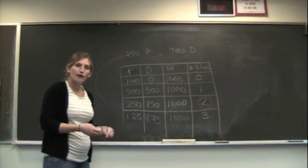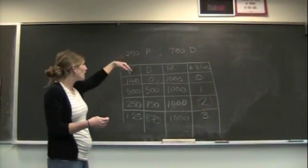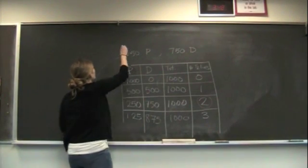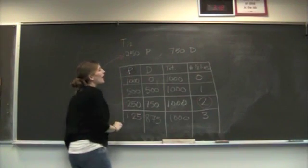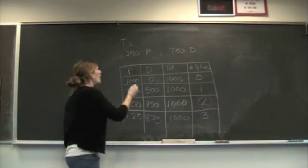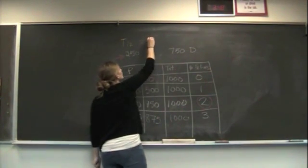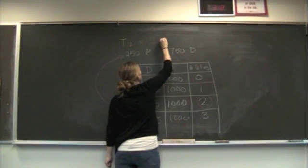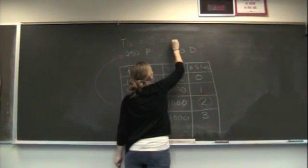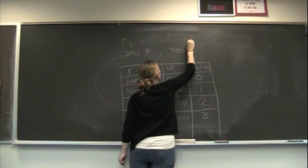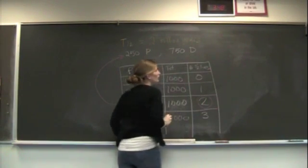We'll just say that for our hypothetical parent-daughter isotope, T one-half, we'll call that our known half-life. We'll say that in this case it's 2 million years.